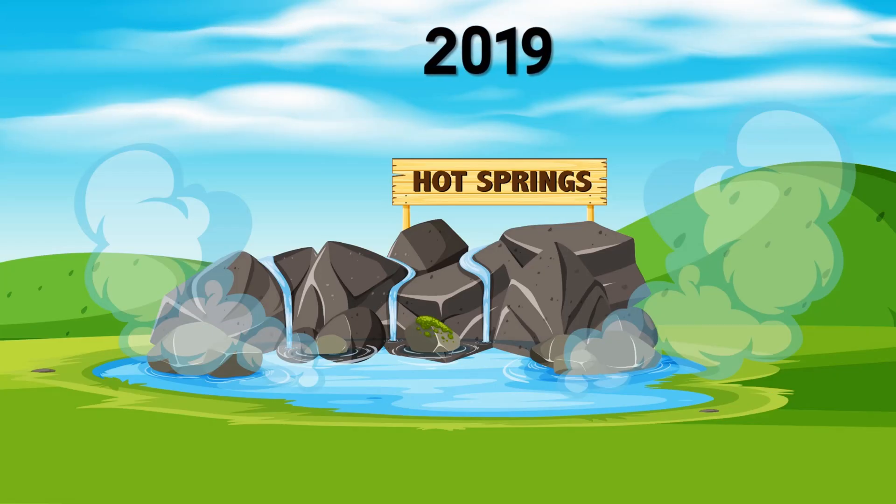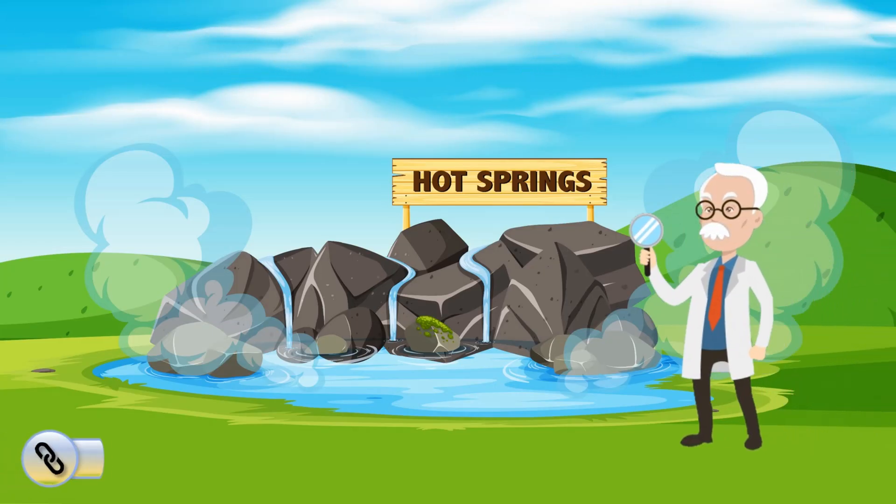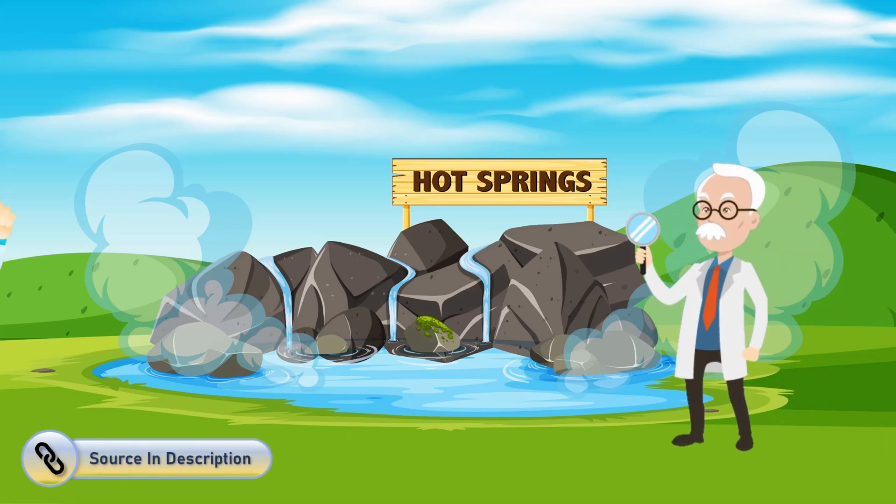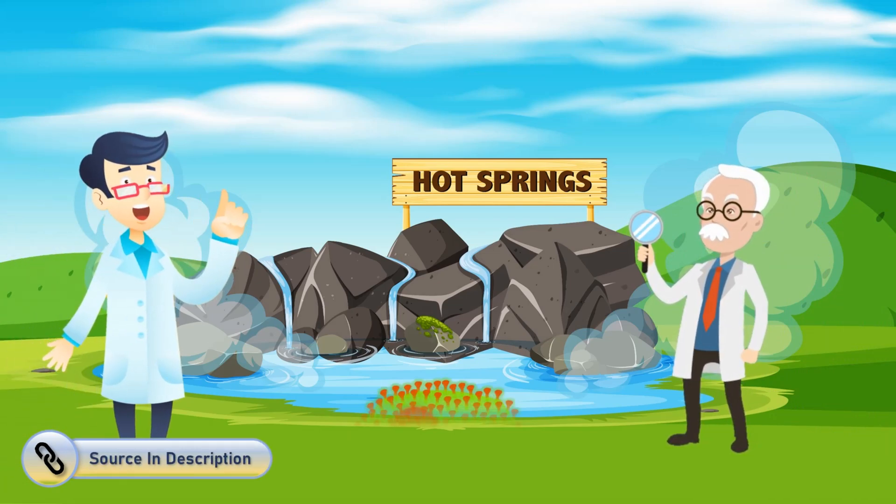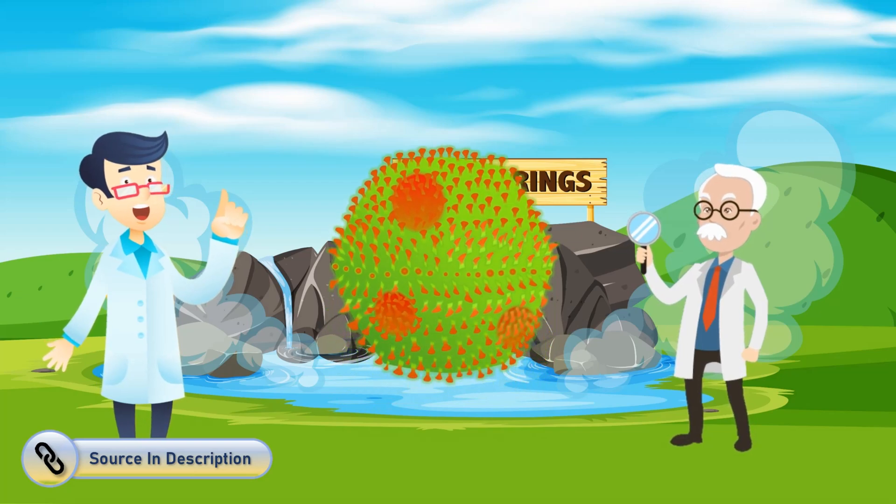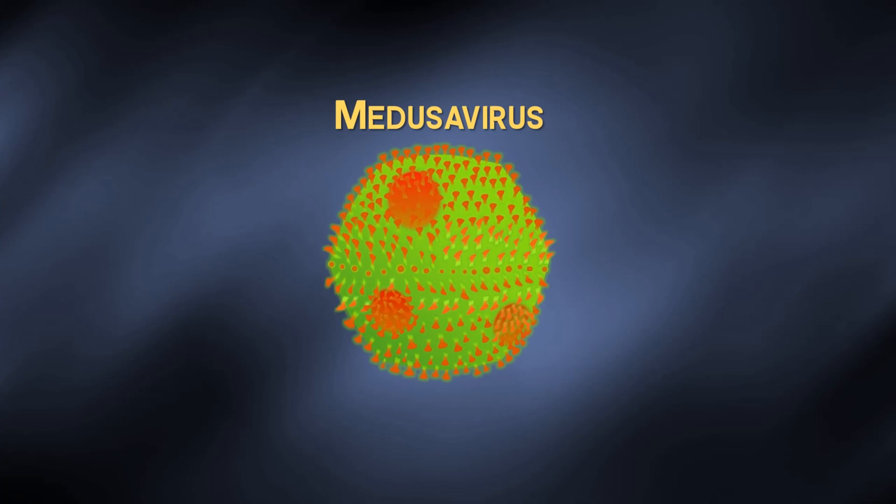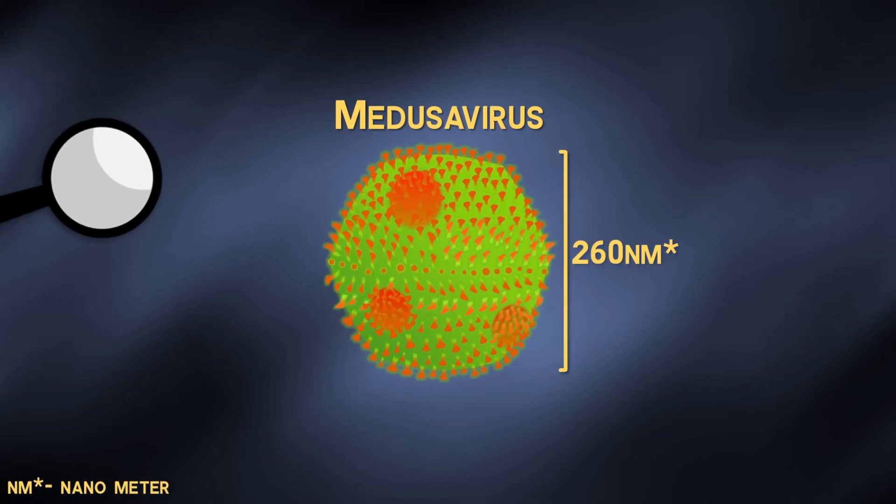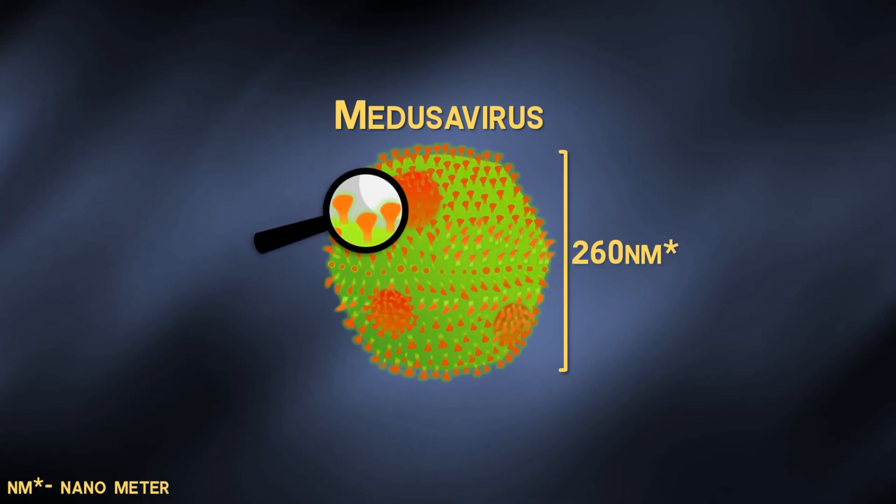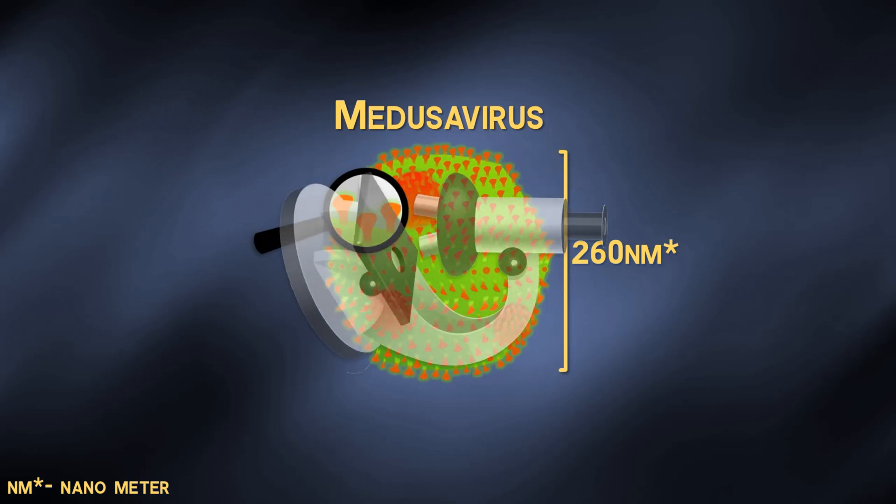As abundant as viruses are, in 2019, scientists from the Tokyo and Kyoto University found a new large virus in the mud and leaves of a hot spring called the Medusa virus. Although not as big as our Mimivirus, it is still reasonable at a diameter of 216 nanometers and has over 2660 round crowns.